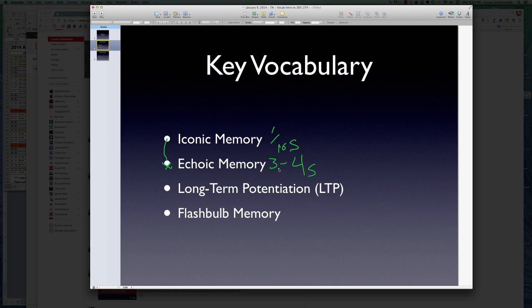Yesterday, we talked about visual encoding and auditory encoding, and then semantic encoding. Visual was the least effective, auditory was the second best, and semantic was the star. Iconic memory is the least remembered. Echoic memory, we remember a little bit better. And then those things that have really personal or strongly emotional meanings to us are the things we remember for a lot.